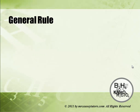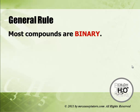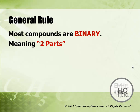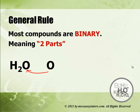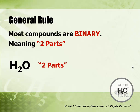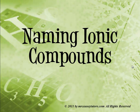General rule for naming compounds: most compounds are binary, meaning they are two parts. Water is hydrogen and oxygen — two parts. Even those with polyatomic ions are still really two parts: the polyatomic ion and the ion it has attached to. So keep in mind it's all just two parts.